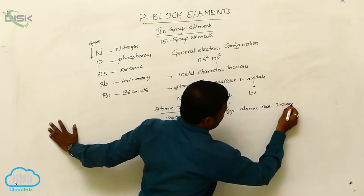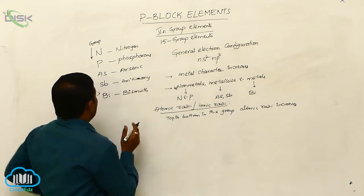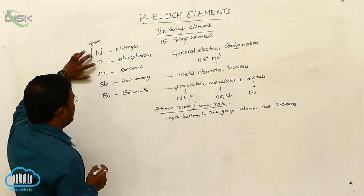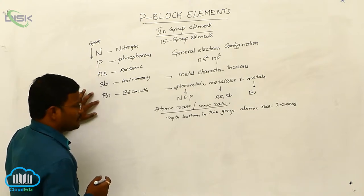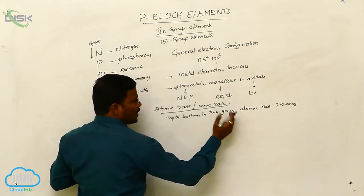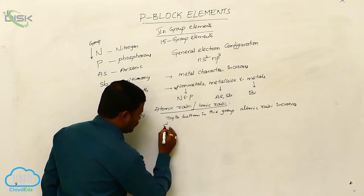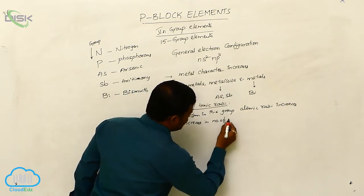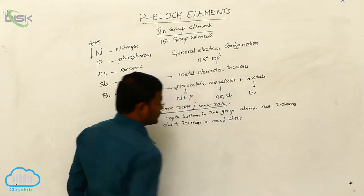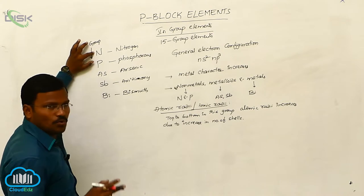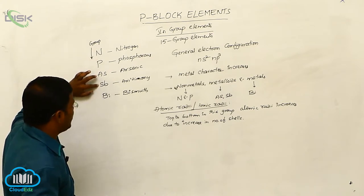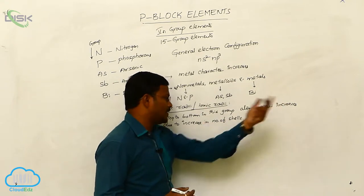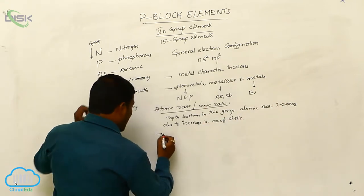Atomic radii increases means the atomic radius of nitrogen is less than phosphorus, less than arsenic, less than antimony, and less than bismuth. From top to bottom in this group, atomic radius increases because of the increase in number of shells around the nucleus. Nitrogen has only two shells, phosphorus three, arsenic four, antimony five, and bismuth six.